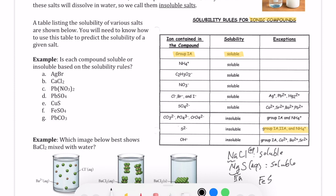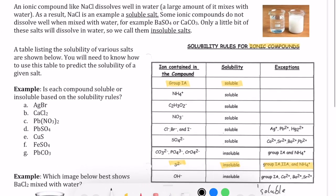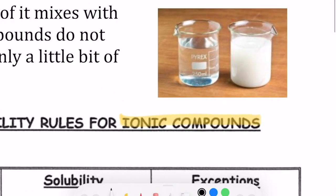Now, what about if I have FeS? Again, going back to the rule, S2 minus, always insoluble, except if it's one of these guys. Well, FE is not any one of those three guys. So as a result, in this case, we would say this is insoluble. When it's insoluble, we put S next to it because it forms a solid, as you saw earlier in the picture, and as the picture this here shows you as well.